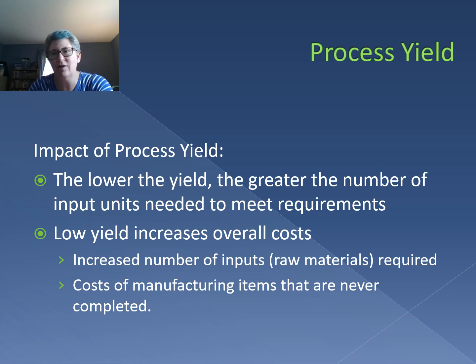The impact of process yield is significant. The lower your overall yield rate, the greater the number of input units are needed in order to meet your demand requirements, which means a low yield is going to increase your overall costs. It's increasing the number of inputs or raw materials that are required to produce your final product. But you're also losing money at each stage of the process. Every time you have a step that you've done a perfect completion and then you have another step where you are not completing all of the inputs, you are wasting manufacturing time, costs, etc. So a low yield rate increases all of your overall costs.